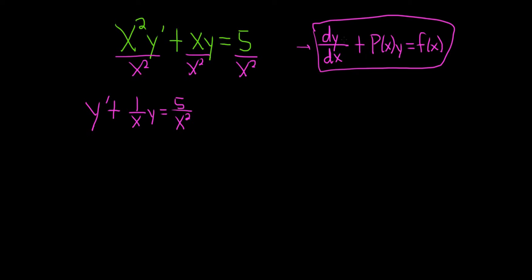The next step when solving linear DEs is to compute something called the integrating factor. The formula for the integrating factor is mu of x and it's equal to e to the integral of big P of x dx.